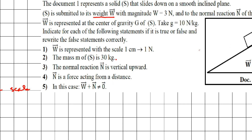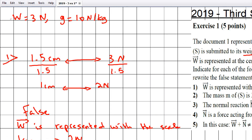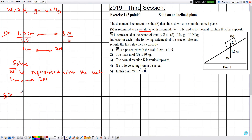Statement two says the mass of S is 30 kilograms. The wrong part is likely the value of the mass, so let's calculate it. We have W equal to 3 newtons and g equal to 10 newtons per kilogram. Using the formula W equals m multiplied by g, we can solve for m.